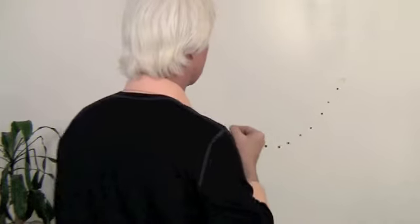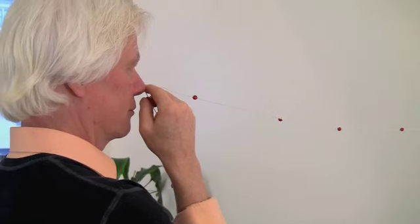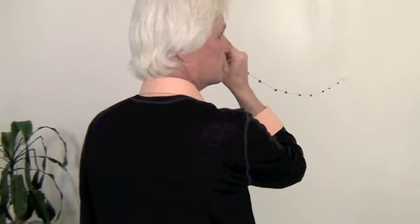Then you turn and face the wall. You want to adjust your position so that there's a slight droop in the string as it goes from your nose to the wall.